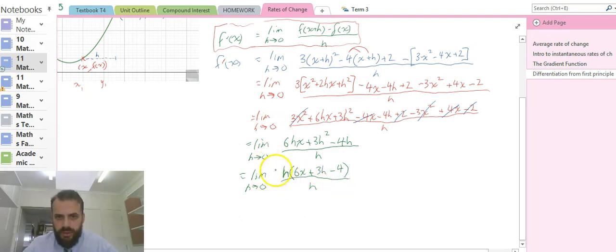Alright, looking good so far, we've got h(6x + 3h - 4) all over h. This is h times this divided by h. Those will cancel out.